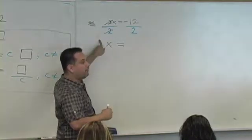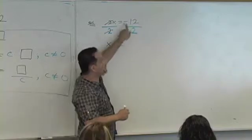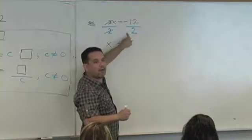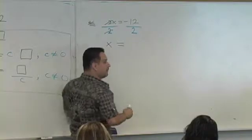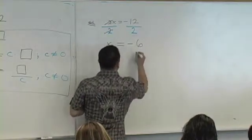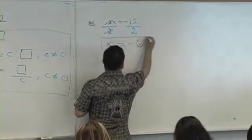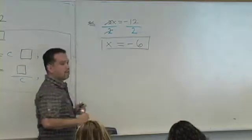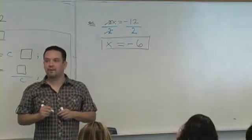So you're left with x on the left. Notice x is by itself. And then you get negative 12 divided by positive 2. Negative divided by positive is what? Is negative. What's 12 divided by 2? So ladies and gentlemen, x is the value what? Negative 6.